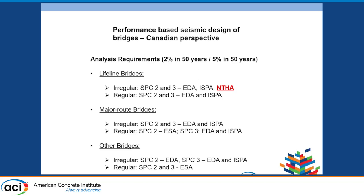The analysis requirements: there are two tables — one applicable to 2% and 5% in 50 years and the other to 10%, which I left out. The only time we require nonlinear time history analysis is when we are lifeline and irregular for both SPC2 and SPC3. Everywhere else you're going to use an elastic dynamic analysis and ISPA. There is some thought needed around the major-route regular SPC2 case, because we're only requiring an ESA, and I don't think you can do performance-based design without doing a pushover unless things are fully elastic.